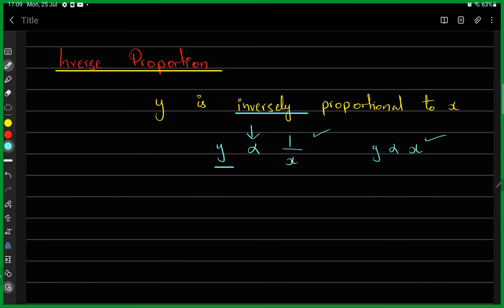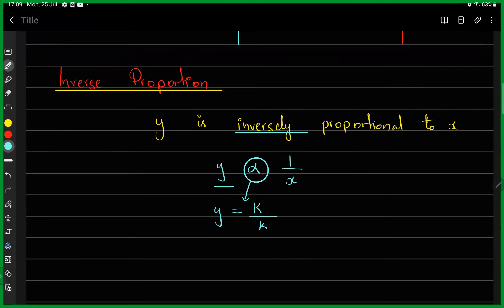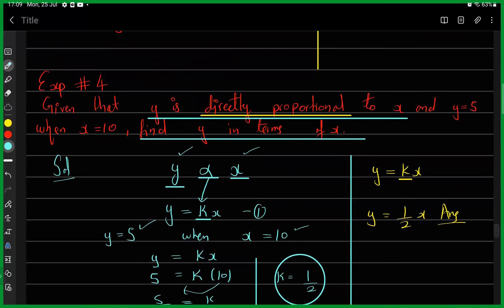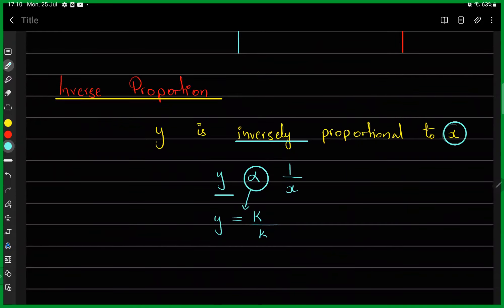The proportionality sign is the same for both direct and inverse proportion. The difference is that for inverse proportion we write the reciprocal of the second quantity. When we remove the proportionality sign and write equals, we multiply by the proportionality constant k on the right side — the same applies for both direct and inverse proportion.